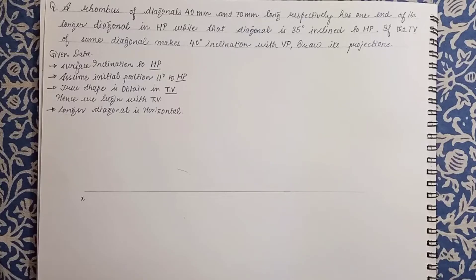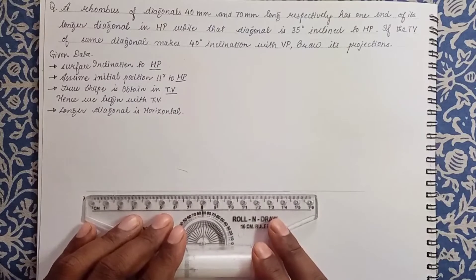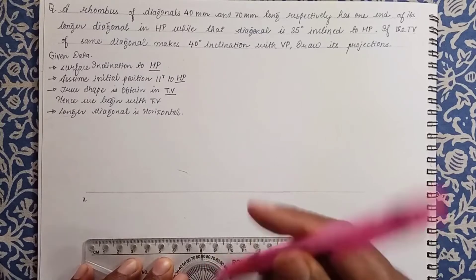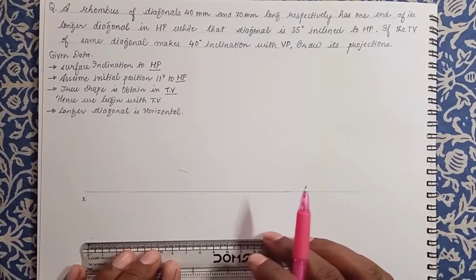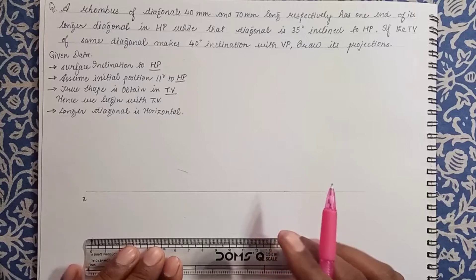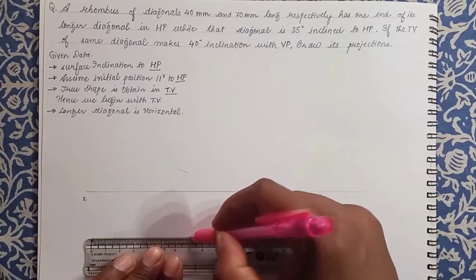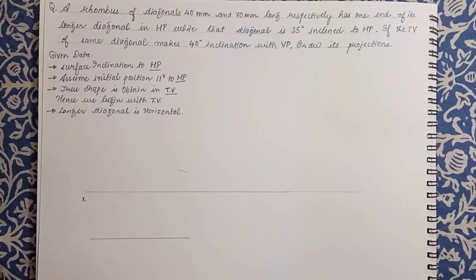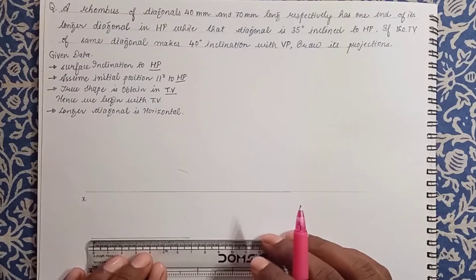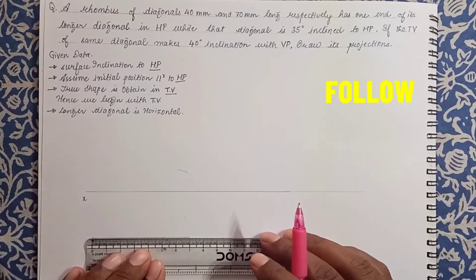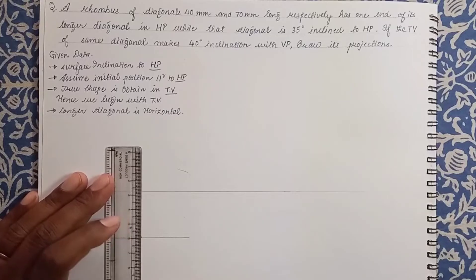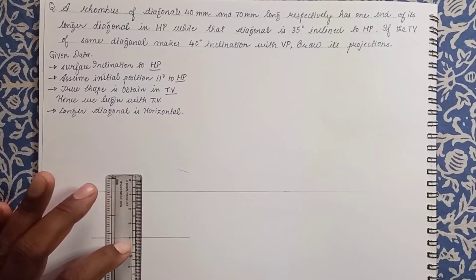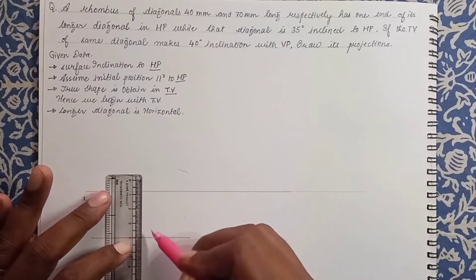In the problem we are given a rhombus with a longer diagonal of 70mm. We draw a line at a comfortable distance and mark the points — 70mm long. This is a construction line so keep the shade a bit light. This is the midpoint: 35mm on each side. Draw a perpendicular to this line for the shorter diagonal — 40mm total, so 20mm above and 20mm below.